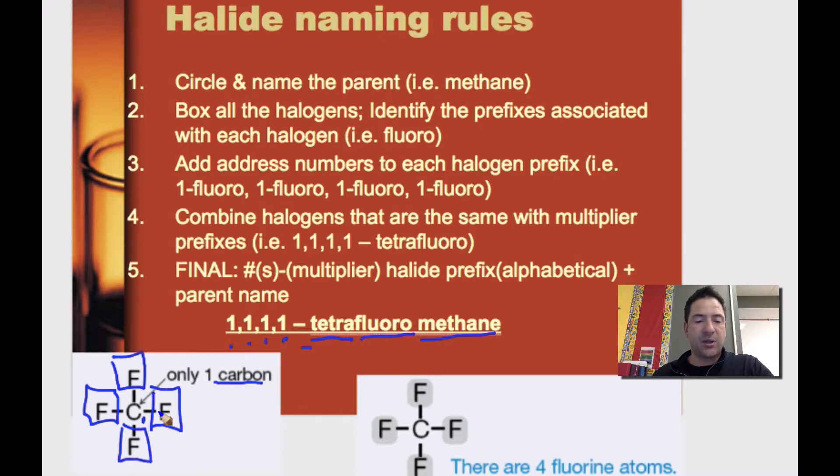But also how many of them are there? So if there were only two here, then it would be 1,1-difluoro. But there's four of them bonded, and there can be four bonds per carbon atom.